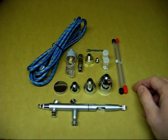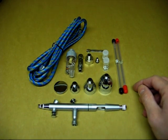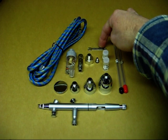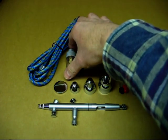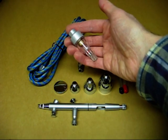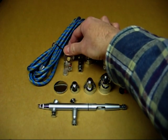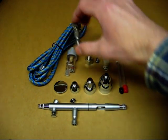Spare 0.3 and 0.5 nozzles and needles. Spanner for nozzle removal. An in-line air filter which acts as a grip as well. A quick release connector.